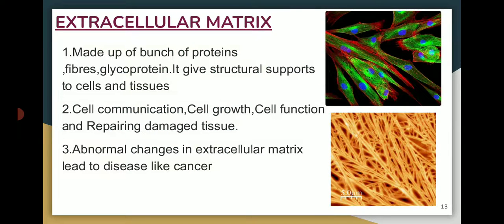The next topic is the extracellular matrix (ECM). The extracellular matrix is something external to the cell. It is made up of a bunch of proteins, fibers, and glycoproteins that structurally support the cells and tissues. It is very important for cell communication, cell growth, cell function, and repairing damaged tissue. This extracellular matrix plays a very critical role inside the body.